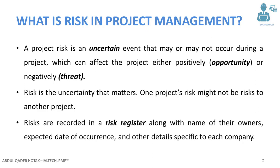Risks are recorded in a risk register. I'm going to show you how a risk register looks like in the next slide. If you want that template, please write down your email in the comment section so I can share it with you. Risks are recorded in the risk register along with the names of owners, expected date of occurrence, and other details. Each company has its specific standards and templates, so their risk registers might look different, but the contents are almost the same for all organizations.